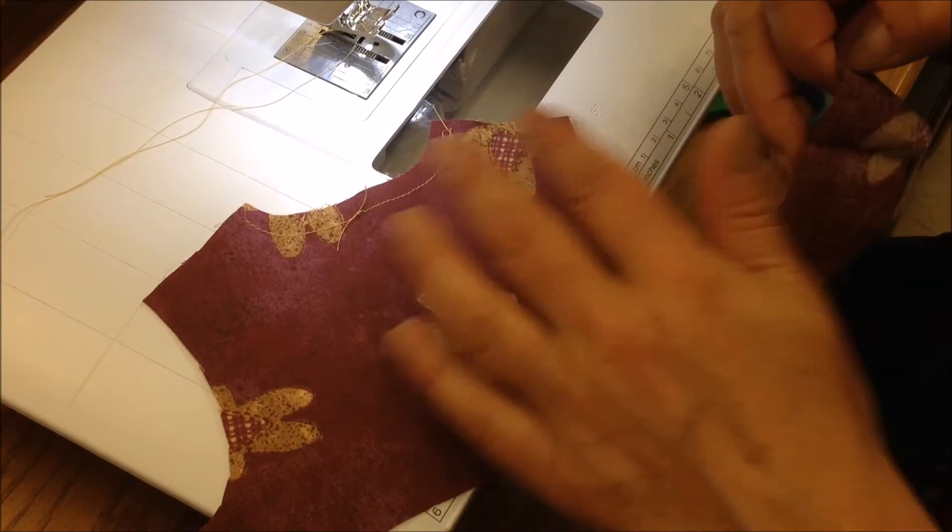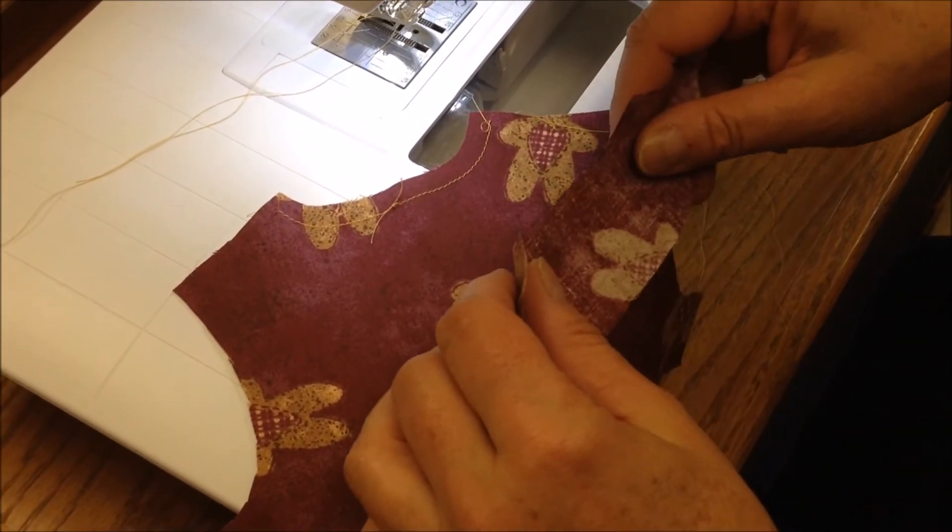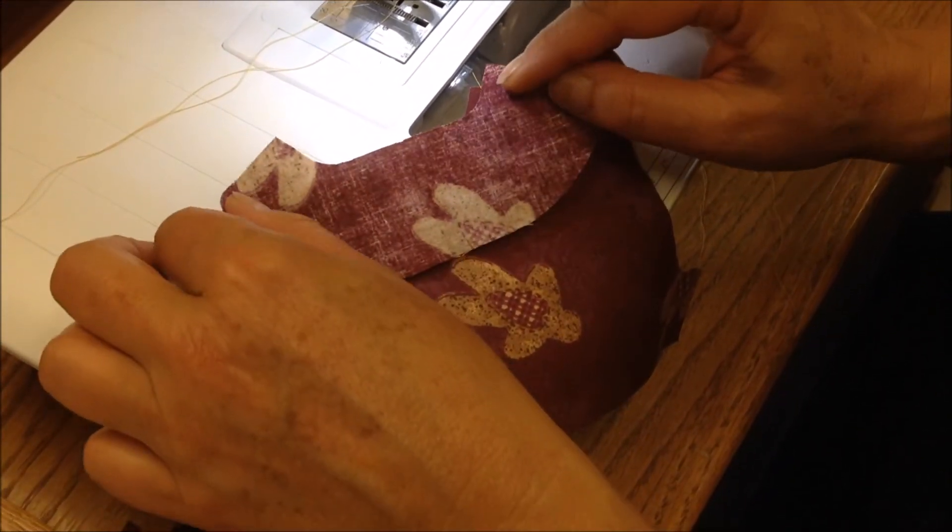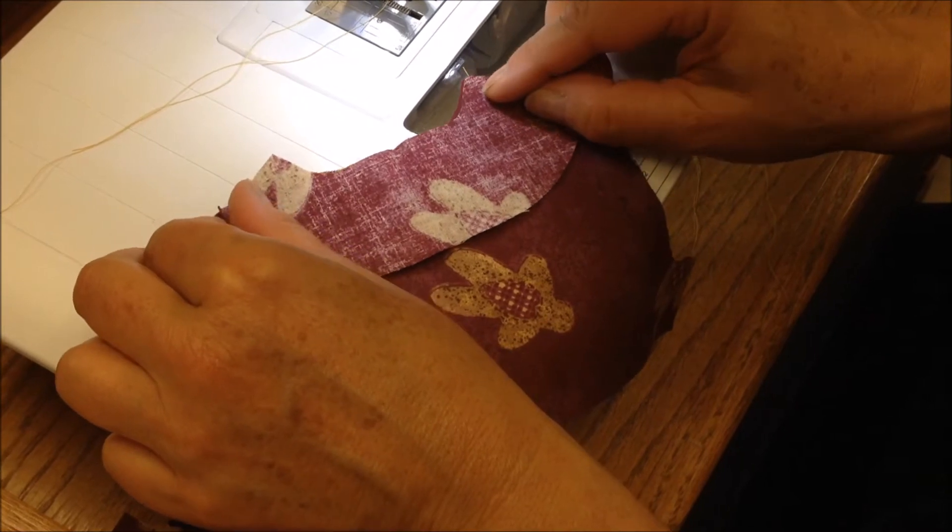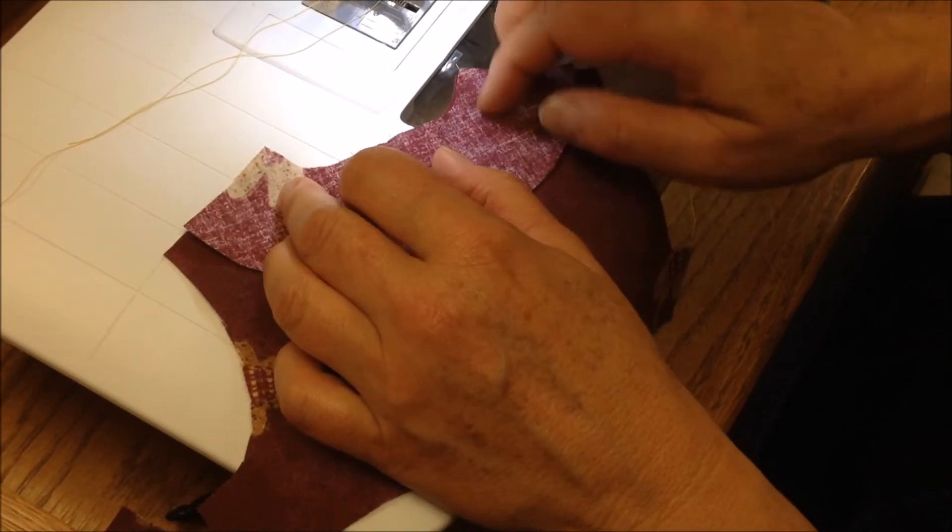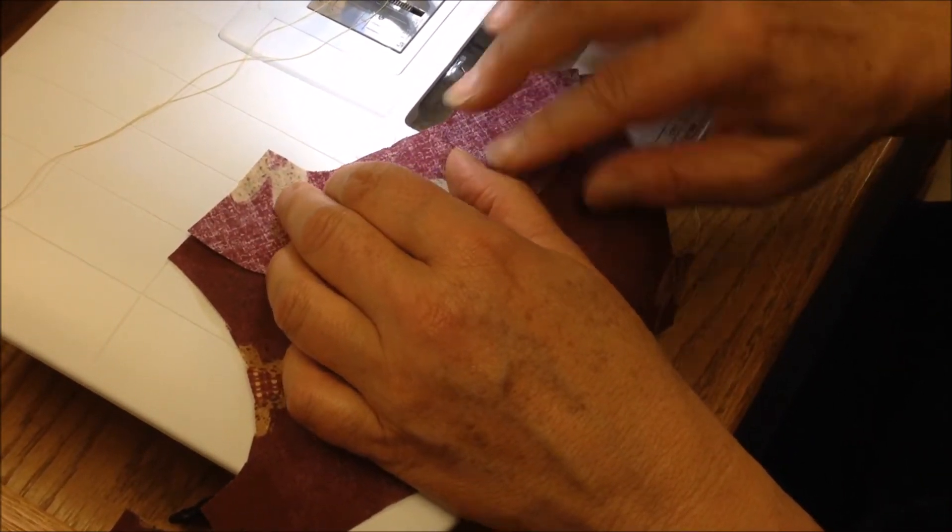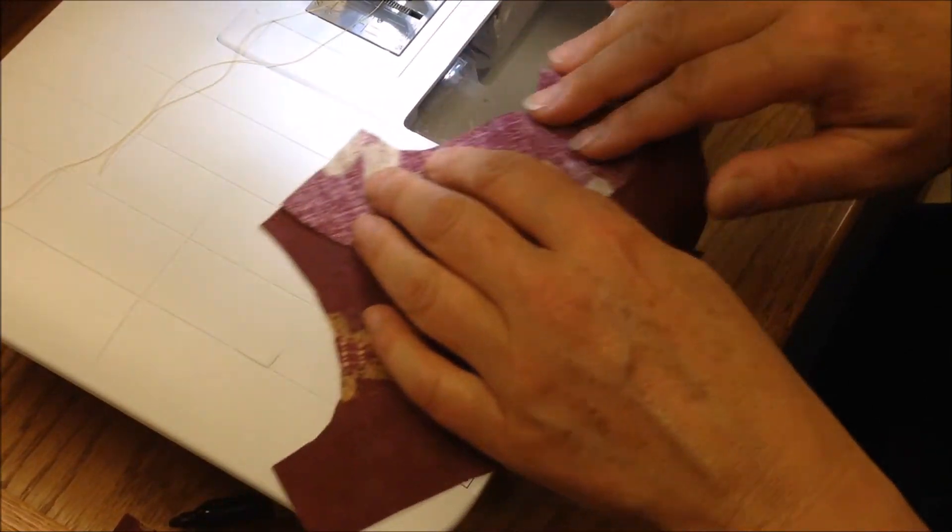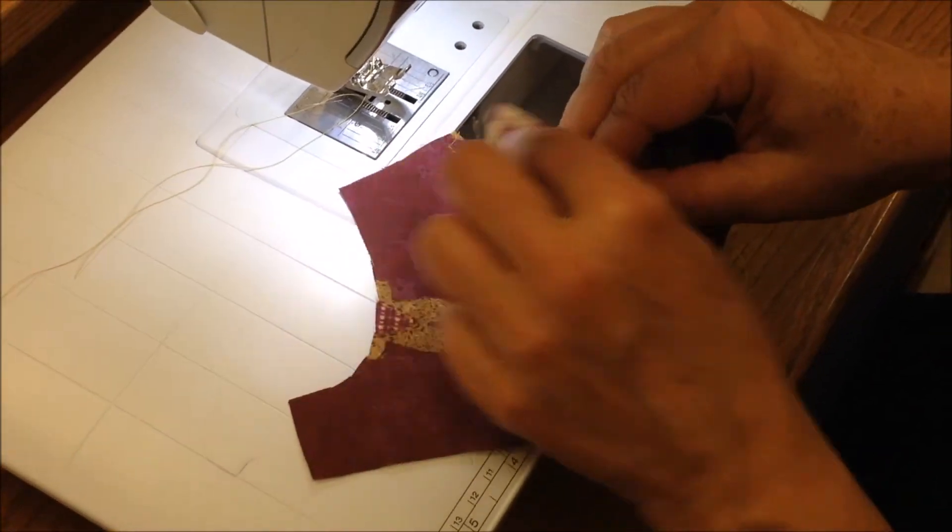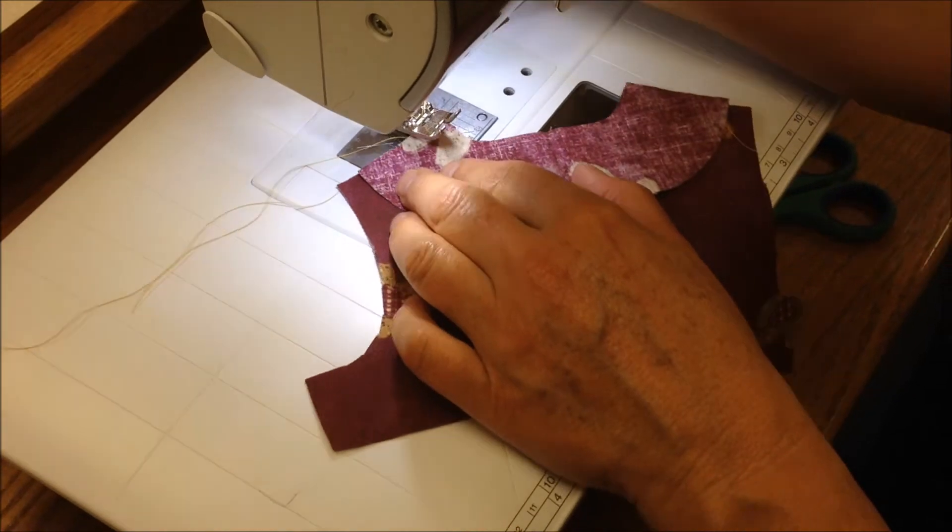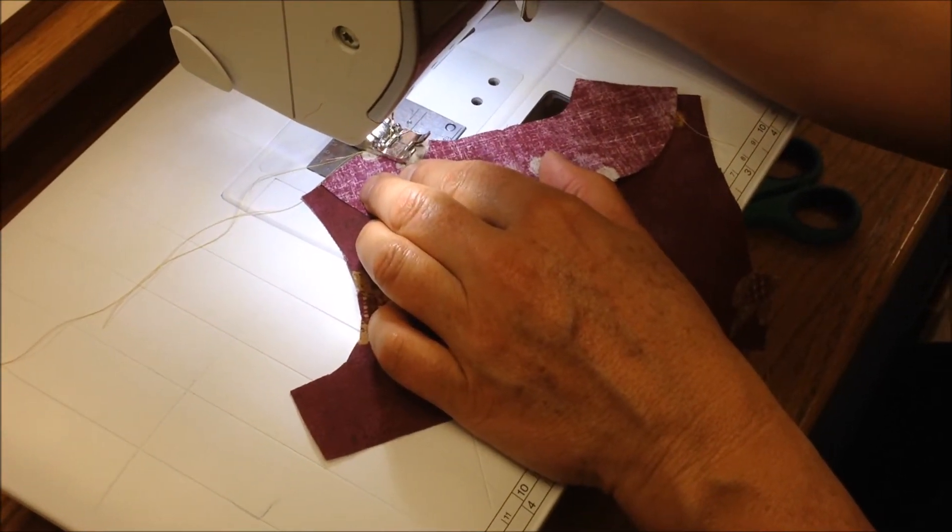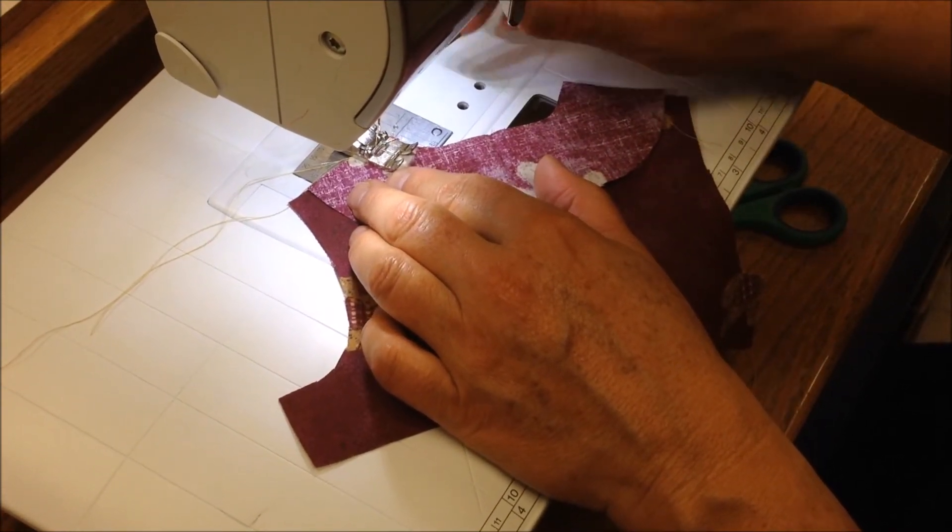Now that we've prepared our neck edge with the stay stitching, we'll add our facing piece. Remember, this is small scale, so we're only going to do a 3-8 seam allowance. Full scale, it would be 5-8, and the stay stitching would be kept hidden. So, find your 3-8 line. I'm going to put the needle in the down position.